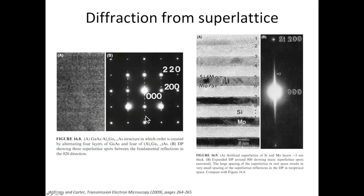The example on the right shows the silicon molybdenum multi-layer structures. You can see the diffraction spots from silicon. Between the silicon 200 spot and the transmitted beam, the (0, 0, 0) spot, you see many additional spots. These are again from the superlattice, and the superlattice is caused by the periodicity from the silicon and molybdenum layers.